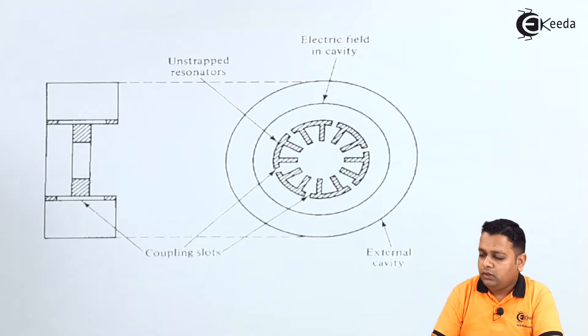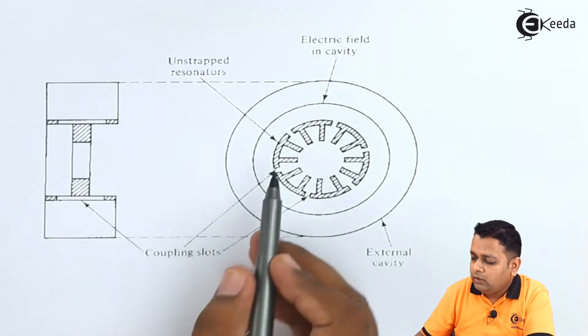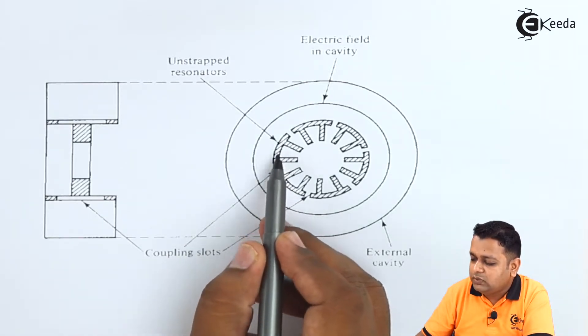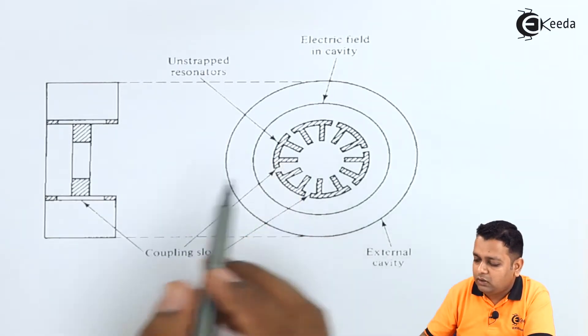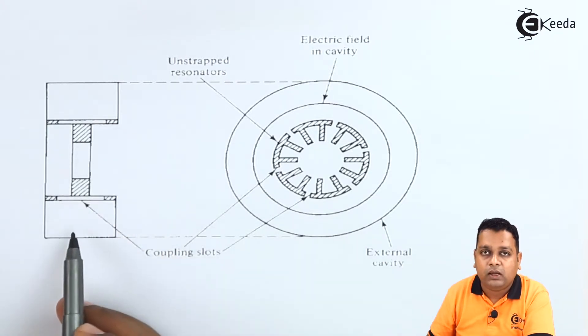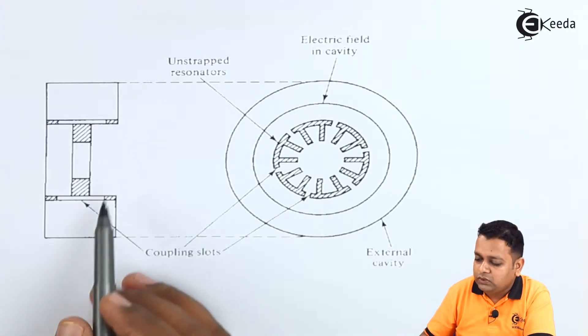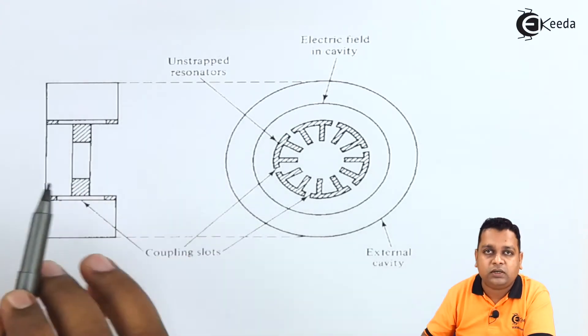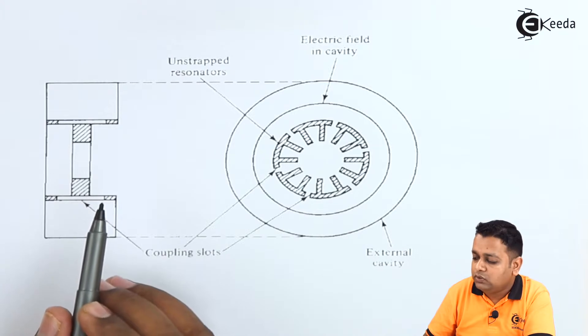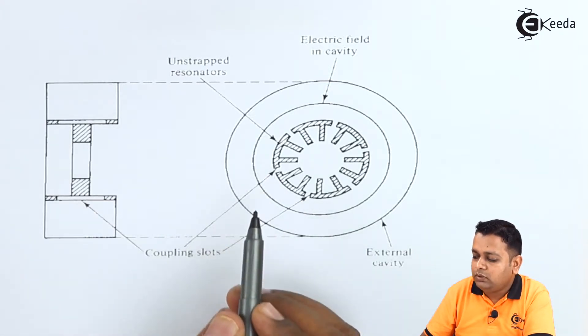So here in the diagram, we see first of all, the resonators that have been shaded here and the cross section can be seen on the left hand side. So here the two cavities that we can see here, so this is the resonance circuit that is making the use and it is a part of the anode body.